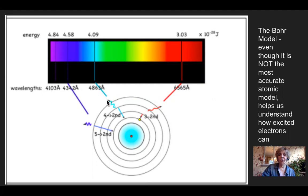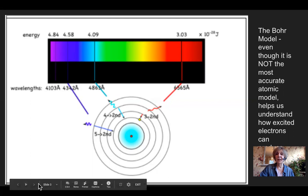And as they fall back down, they give off a photon or a package of light and that package of light is at a certain wavelength and it produces this light that we see.